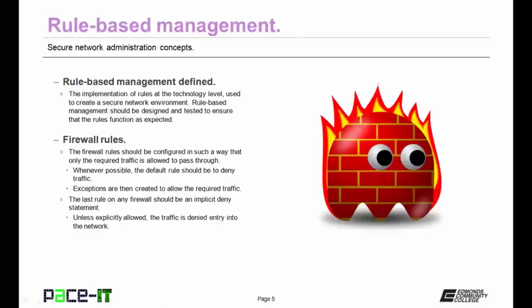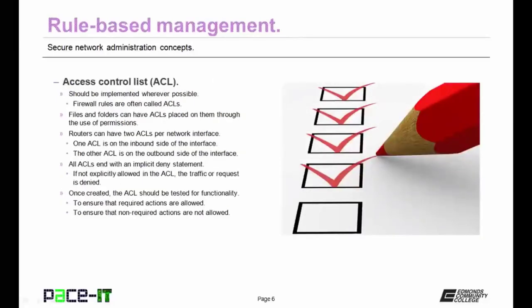Firewall rules fall under rule-based management. The firewall rules should be configured so that only the required traffic is allowed to pass through the router. Whenever possible, the default rules should be to deny traffic; once that default rule is in place, exceptions are created to allow required traffic. The last rule on any firewall should be an implicit deny statement — meaning that unless explicitly allowed, the traffic is denied entry into the network. The access control list is another part of rule-based management.